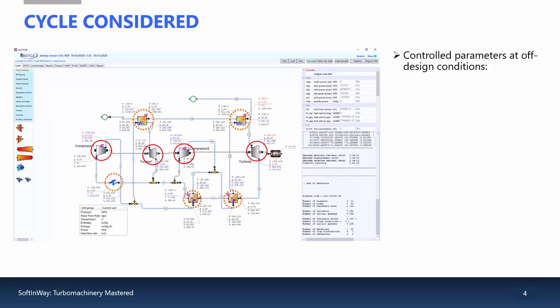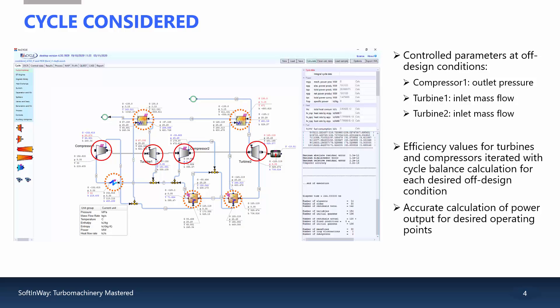For each desired part load mode, we need to provide some initial values to obtain the desired output power. These initial values include compressor 1 exit pressure, turbine 1 mass flow rate, and turbine 2 mass flow rate.